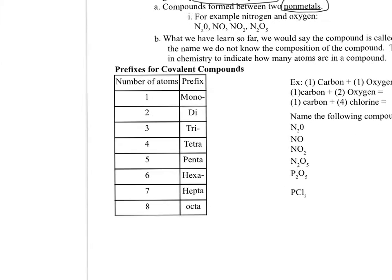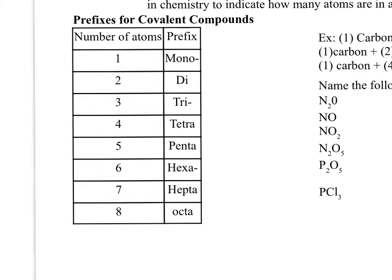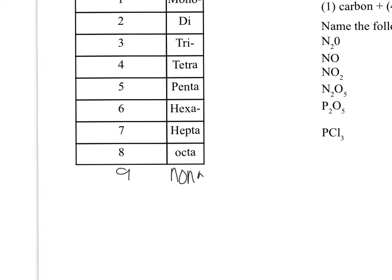For covalent bonds we use Greek prefixes. You have to know these: mono is 1, di is 2, tri is 3, tetra is 4, penta is 5, hexa is 6, hepta is 7, octa is 8, nona is 9, and deca is 10. Tricycle and triangle help you remember tri is 3. Pentagon has five sides so penta is 5. Hexagon has six sides so hexa is 6. You need to know the first 10, though typically no more than 6 will be asked.